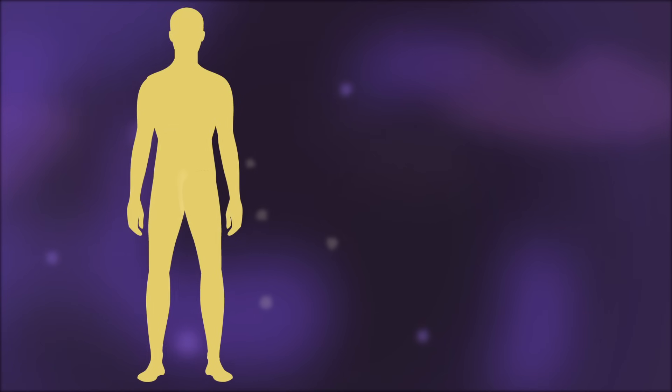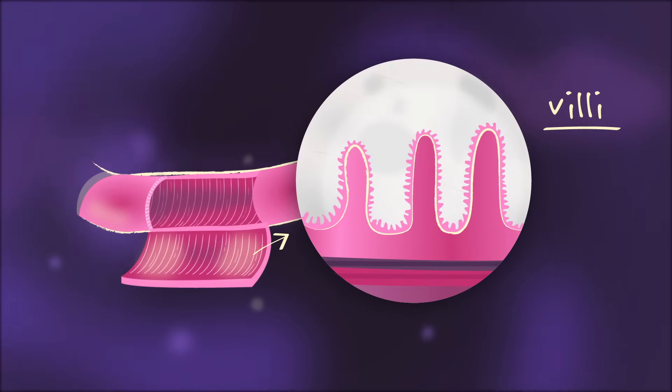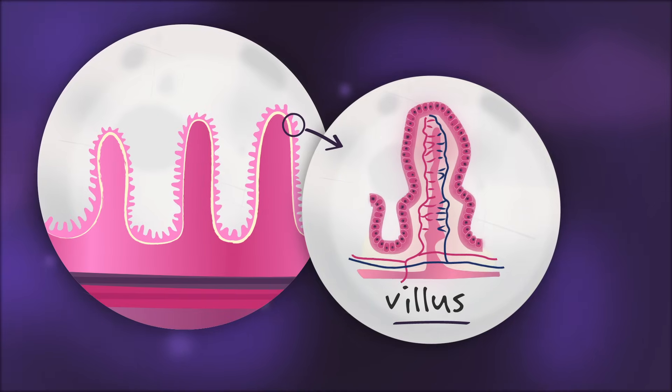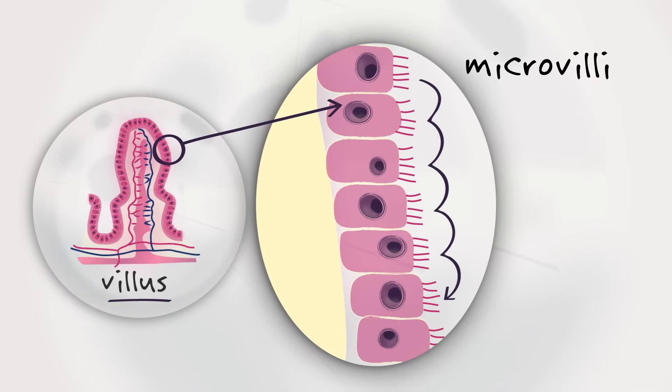Another example can be found in your small intestine, where structures called villi fold up into little fingers. Each villus is made of cells with highly folded membranes that have tiny bumps, called microvilli, to increase their surface area.